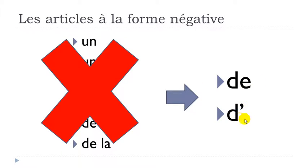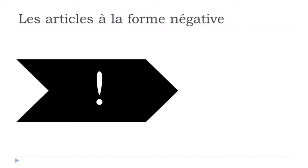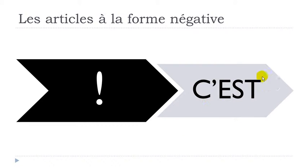You will use 'de' or 'd'' (d'apostrophe) if the following word starts with a vowel sound. This is a very important rule to remember, because we use the negative form quite often. However, in French we have an exception, and that exception involves the structure 'c'est' — meaning 'it is' or 'this is.'